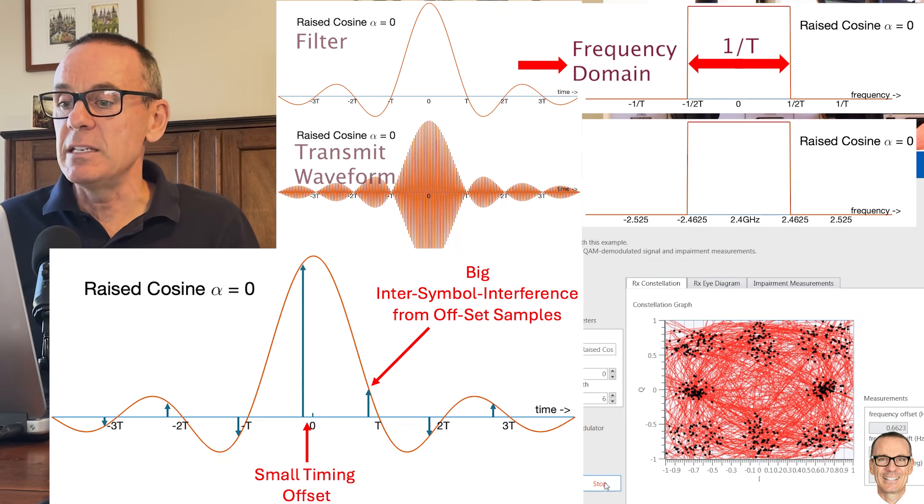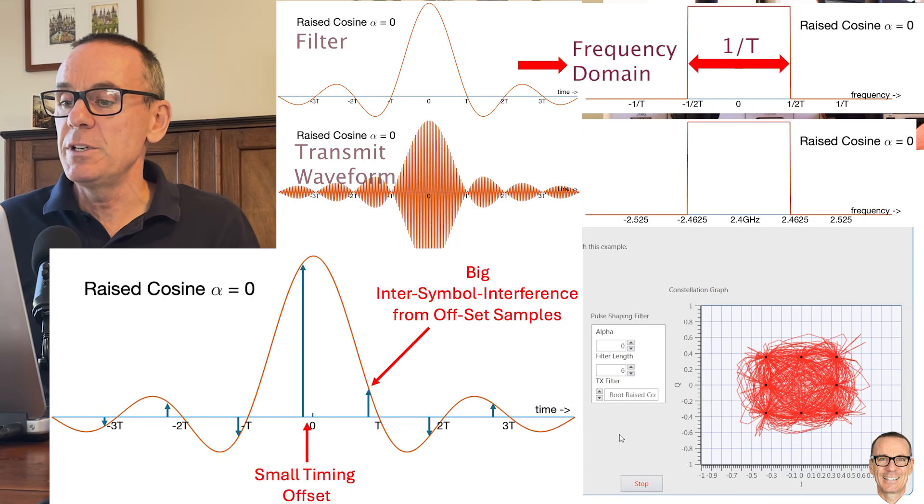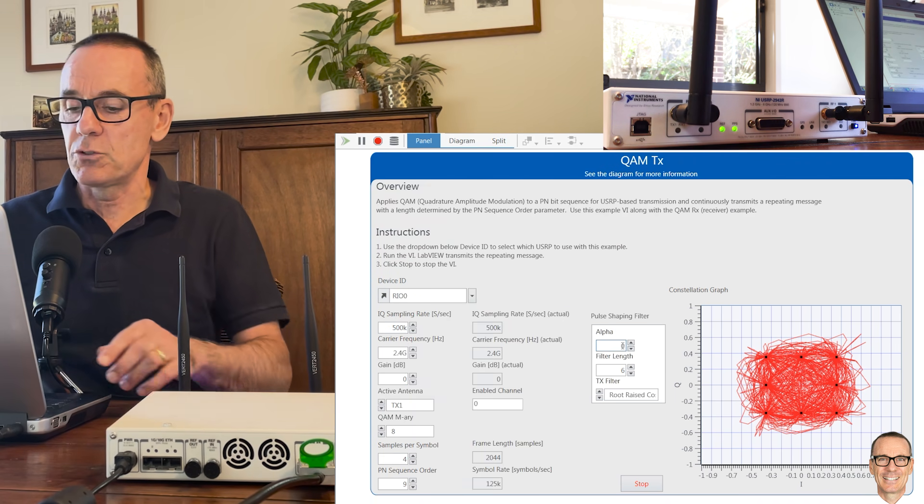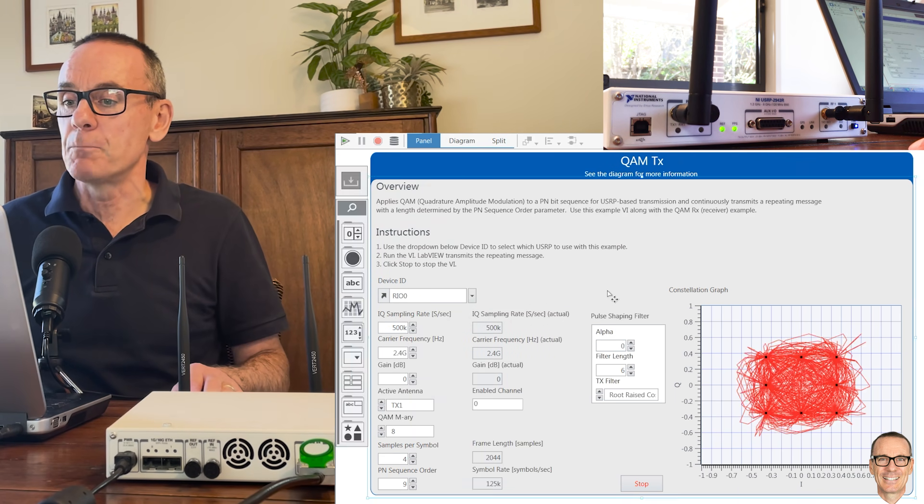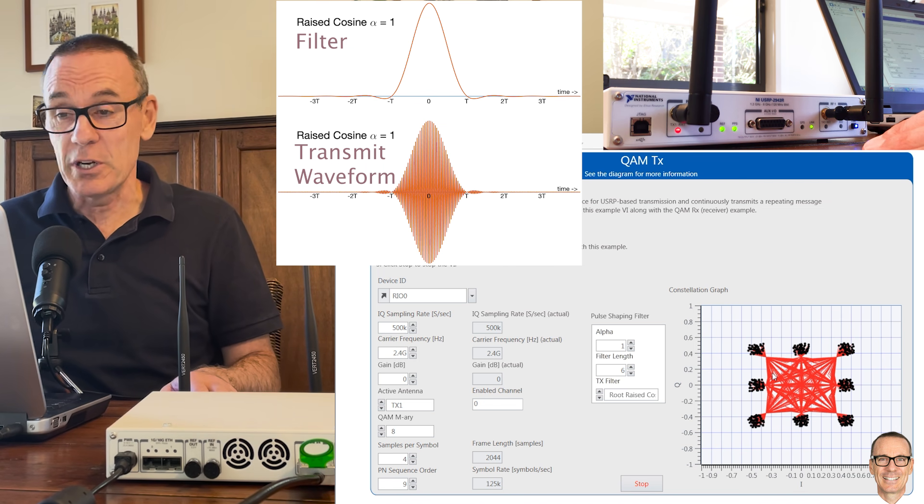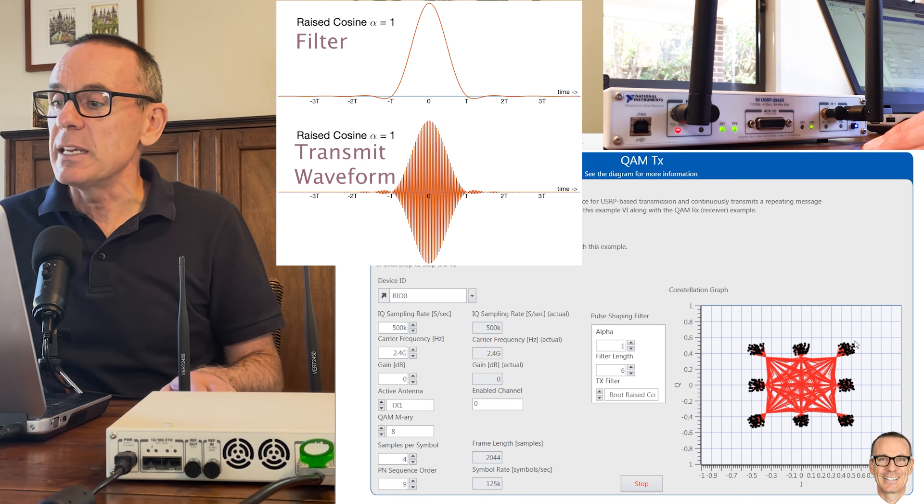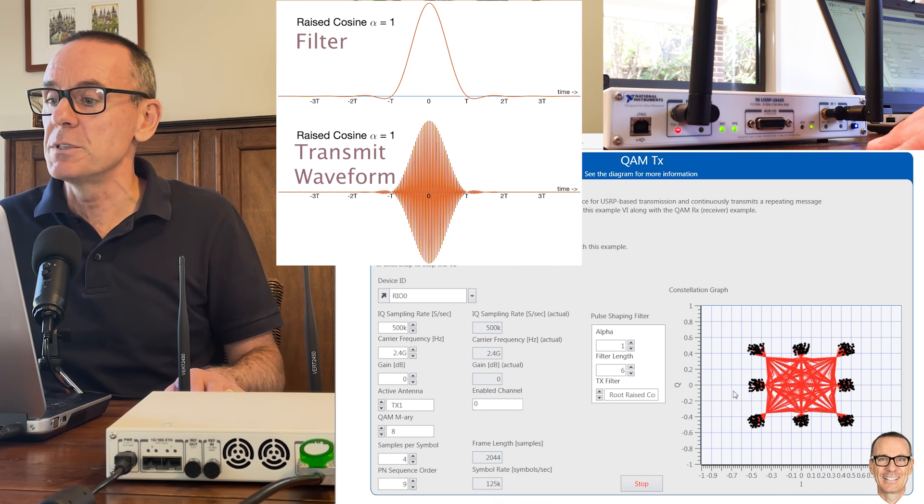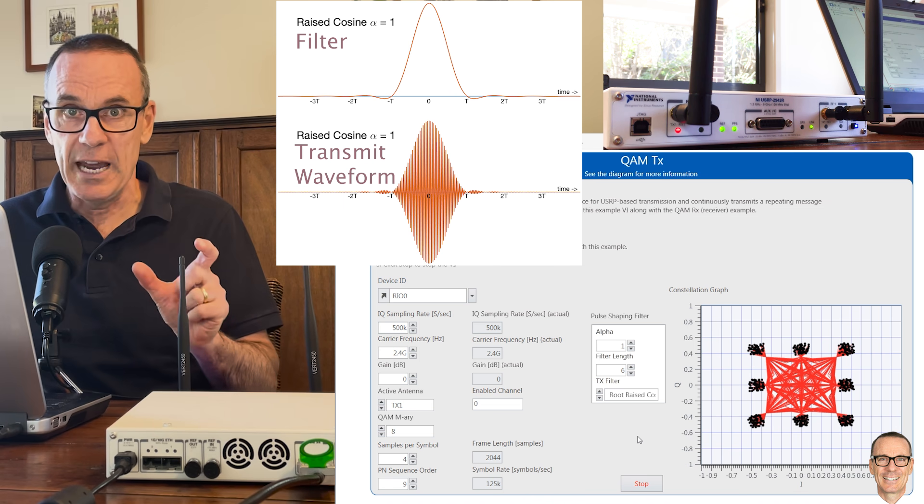So let's try a different value of alpha which is not quite so aggressive as alpha equals zero. Let's try perhaps the other extreme of alpha equals one. Now we've got a different shape in the transmitter. It's kind of an interesting shape. The eight points are more dispersed than they were for alpha equals zero but of course this is only at the transmitter.